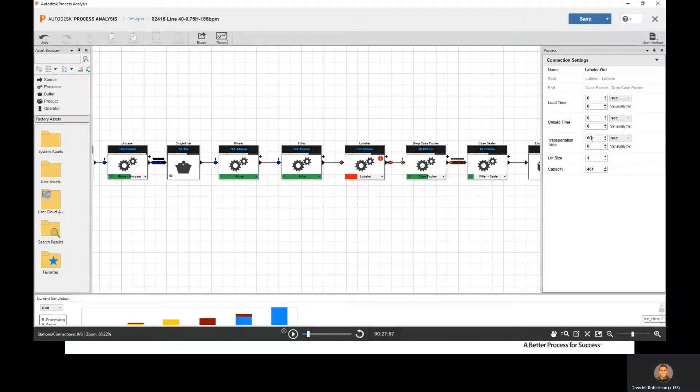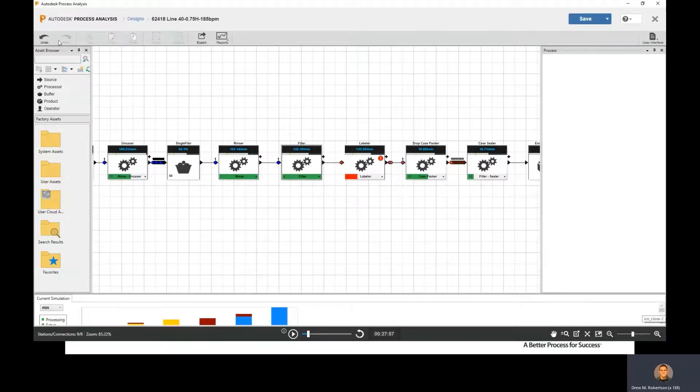So we can run that simulation for different scenarios, and we can increase how fast the conveyors are running or decrease the transportation time. This effectively is changing the spacing between the bottles, getting bottles to the drop case packer faster to keep it running. But also if that drop case packer goes down, that space between the bottles can now start to build back up with bottles. So it's acting as sort of a buffer between the labeler and the drop case packer without having to add equipment.